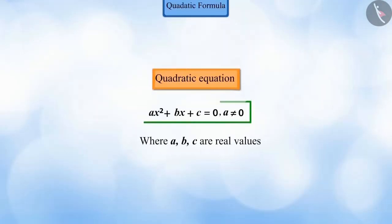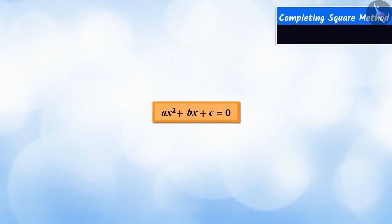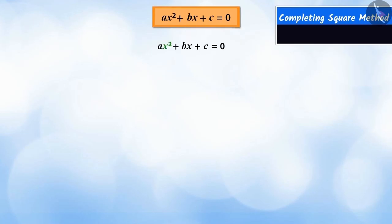We know that this is a general form of the quadratic equation. To solve this equation by completing the square method, first, we divide the equation by a to make the coefficient of x to the power 2 as 1.